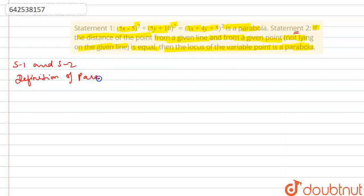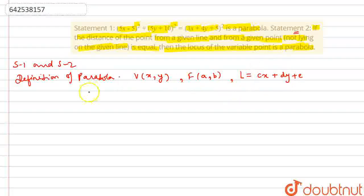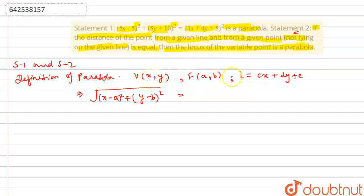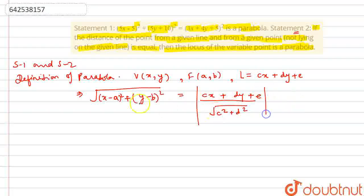By the definition of a parabola, if we consider a variable point (x, y), a fixed point (a, b), and a fixed line cx + dy + e = 0, then the distance from the variable point to the fixed point is √[(x − a)² + (y − b)²]. The distance from the variable point to the fixed line is |cx + dy + e| / √(c² + d²). If these two distances are equal, the locus of (x, y) is a parabola.